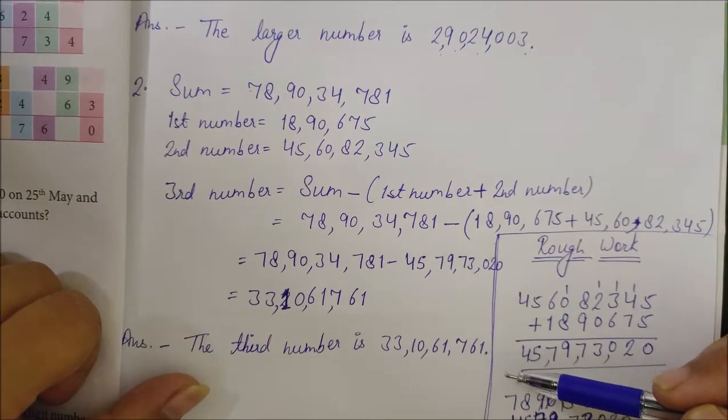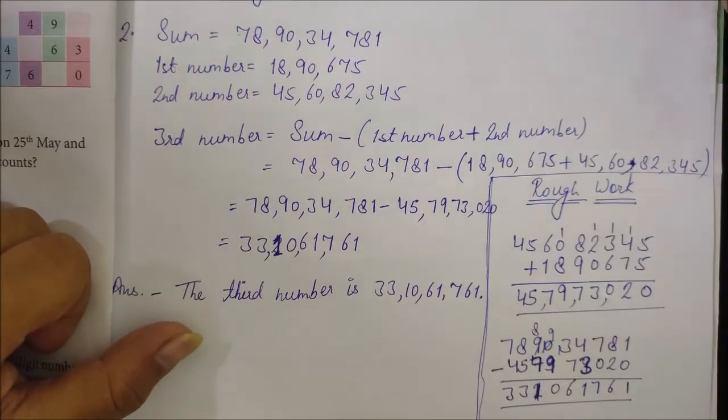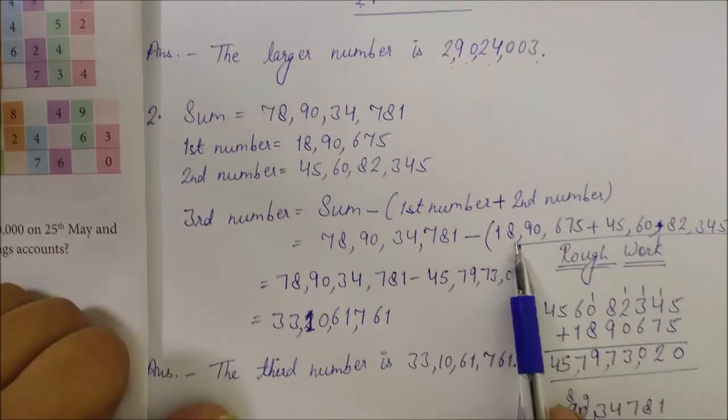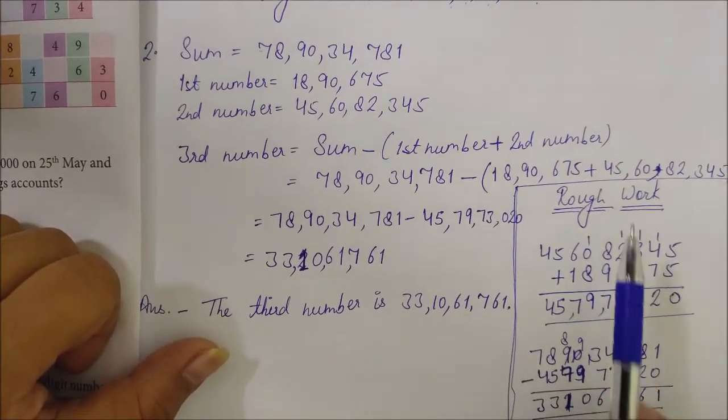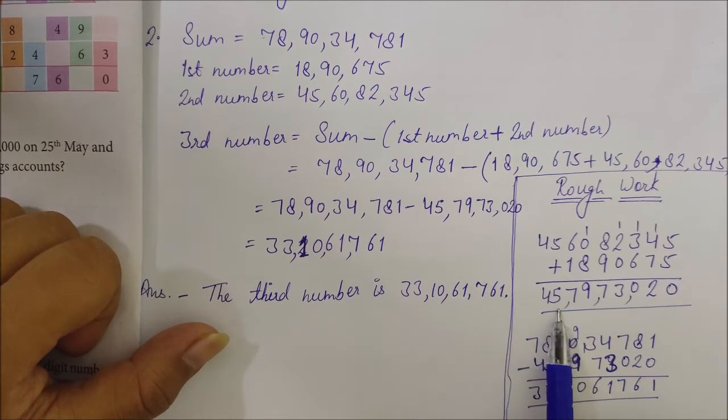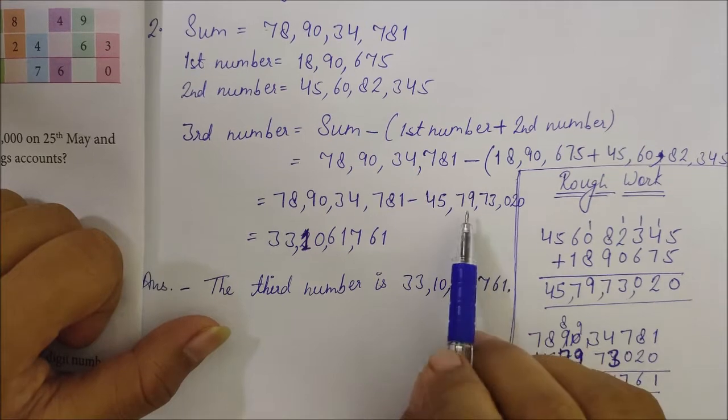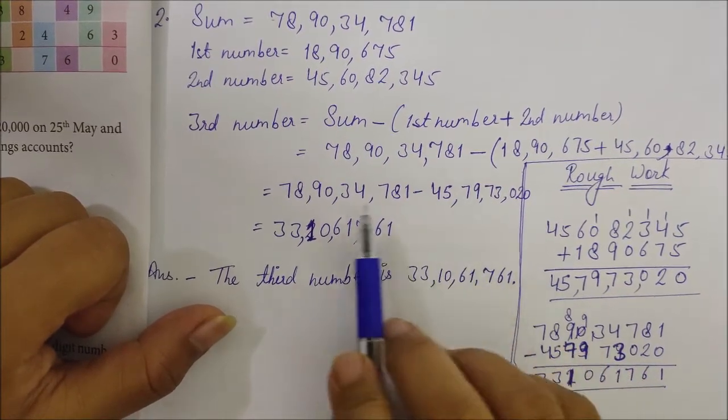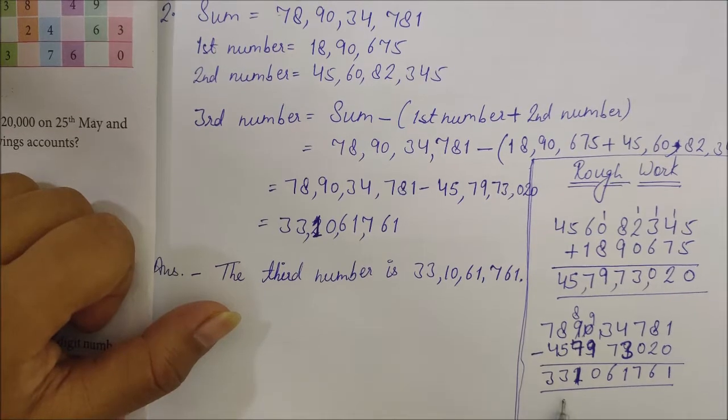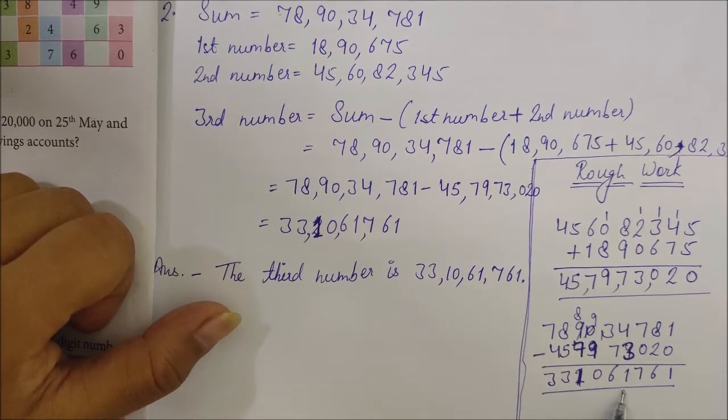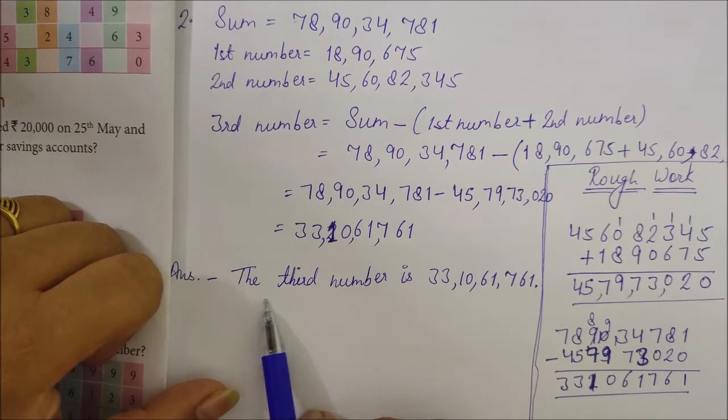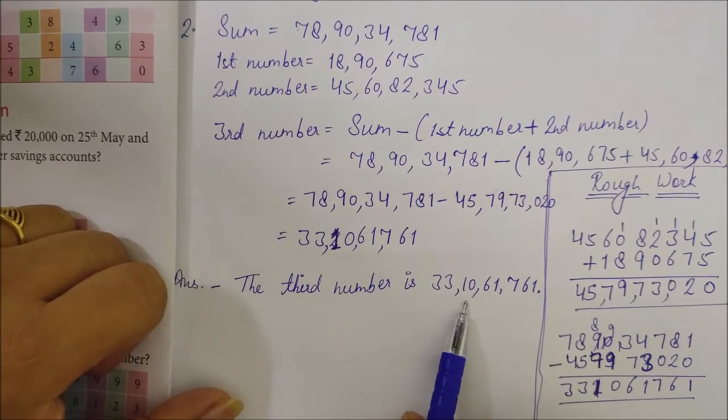I have solved it in the rough column. Always make a rough work column in maths where rough working is required. I added the two given numbers: 45,79,73,020. Then I subtracted this from the sum. The answer is: The third number is 33,10,61,761.